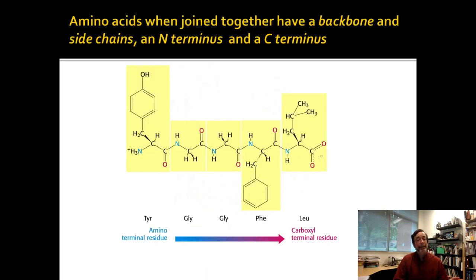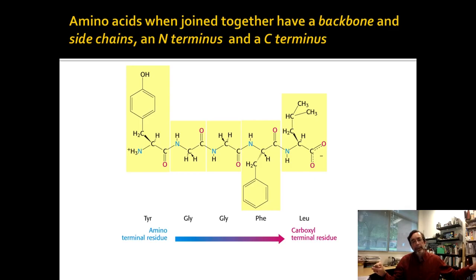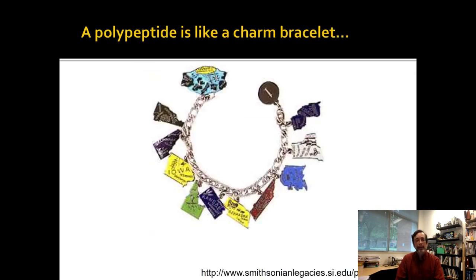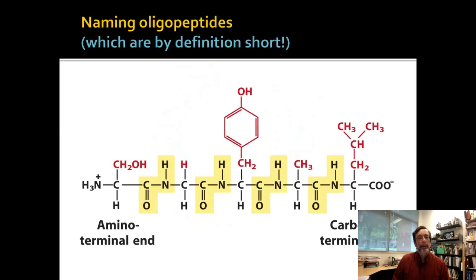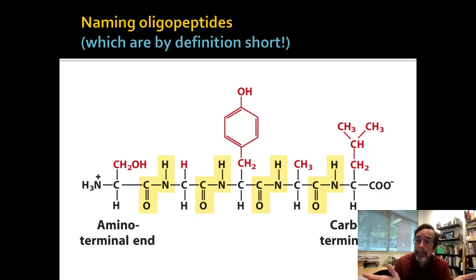I should be clear that we start with the N-terminus, and so we will read in that direction. The N-terminus is the free amino group. The C-terminus is the free carboxyl group, and that gives us a clear direction for how these are arranged. A polypeptide is like a charm bracelet — we have the backbone, and then we have the side chains coming off of it. By definition, if you have less than 10 amino acids together, you call it a peptide.